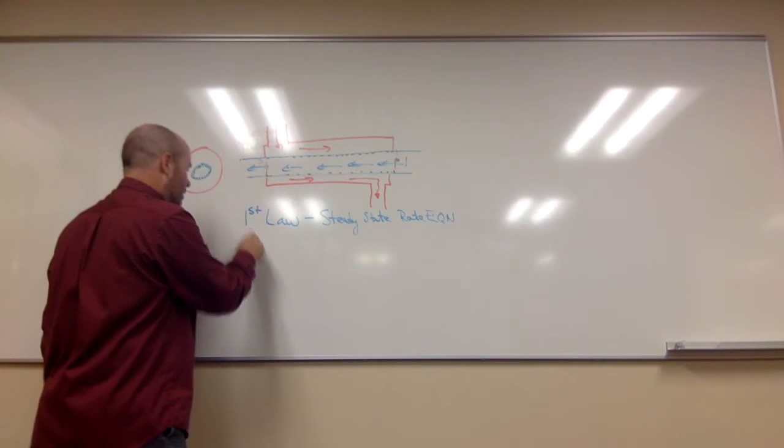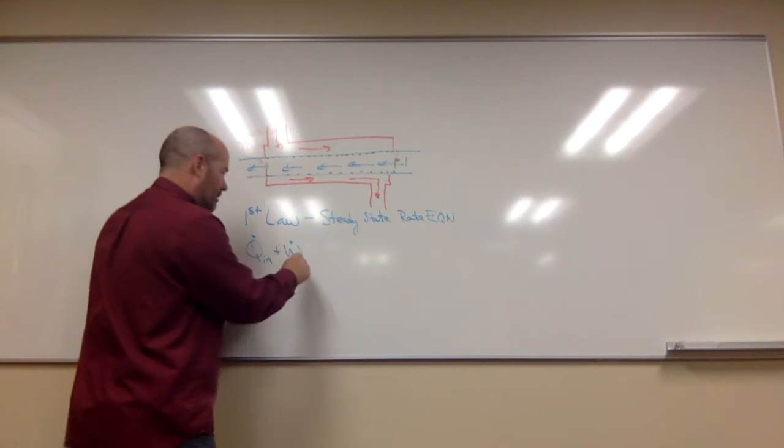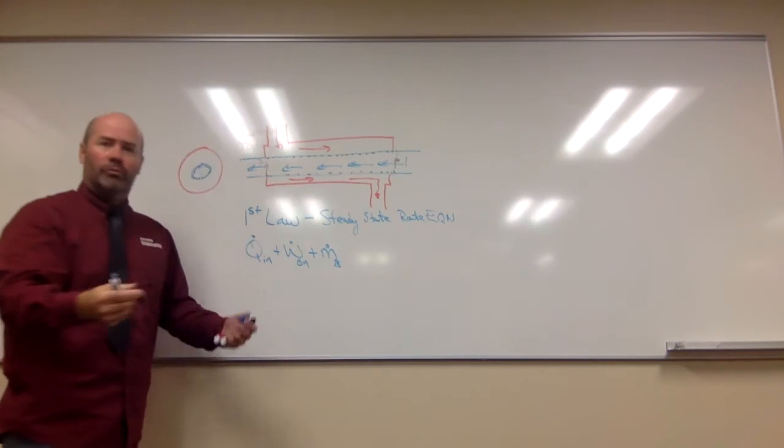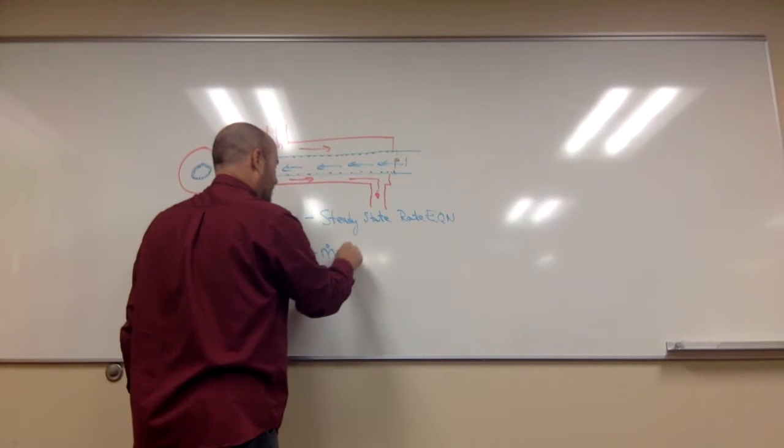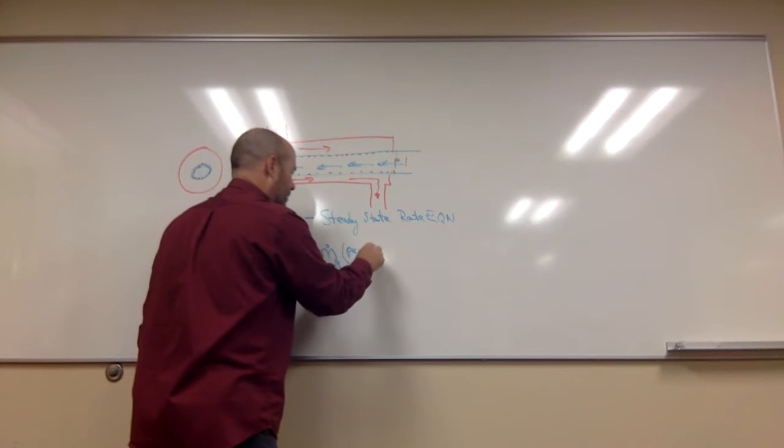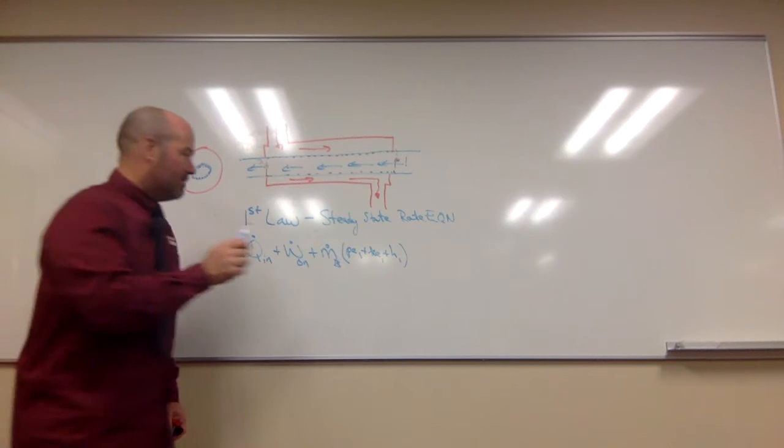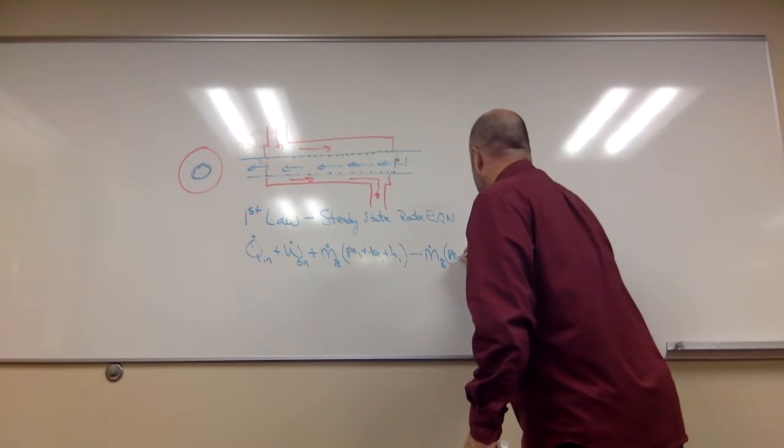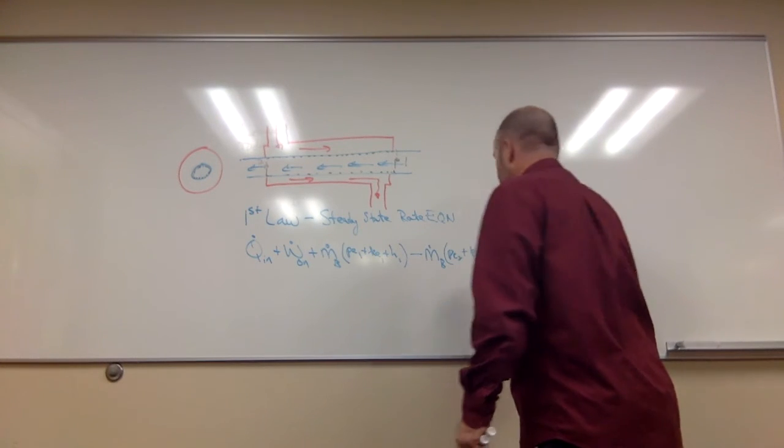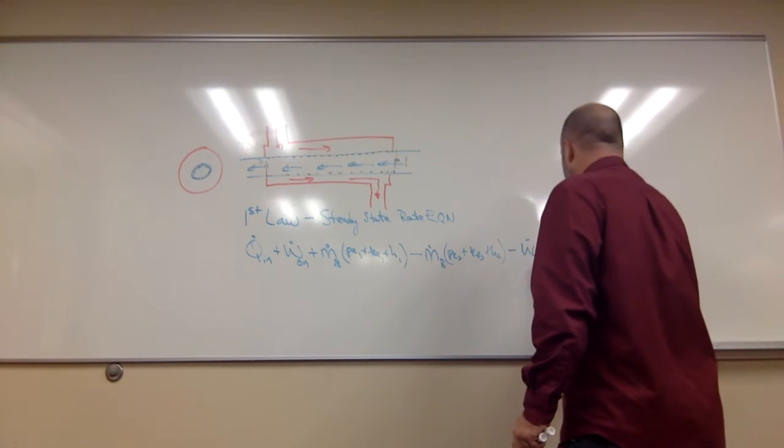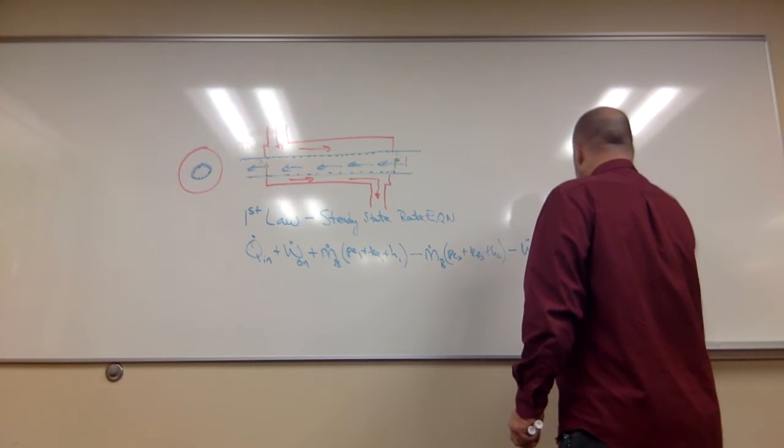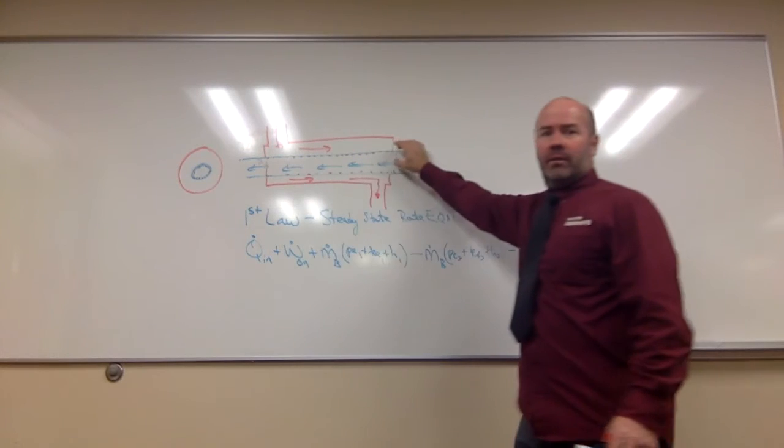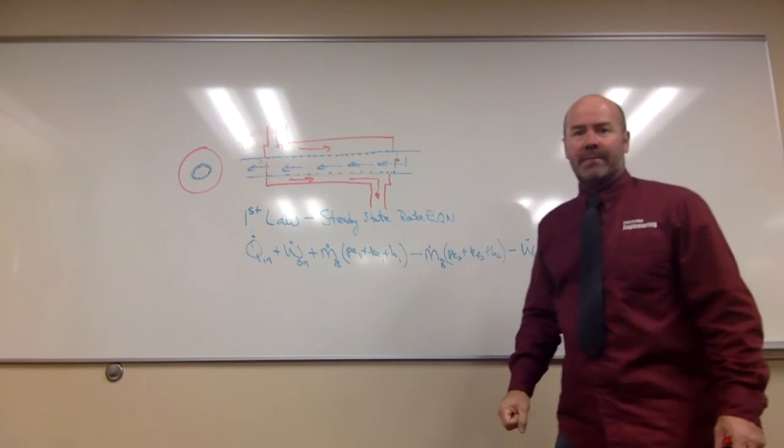Here's what that would look like. The rate of heat transfer into the fluid plus the mechanical power rate of work on the fluid plus the mass flow rate of fluid flowing in. I'm going to call that B for blue fluid times the potential energy at point one. And this is specific plus kinetic energy at point one plus enthalpy at point one minus the mass flow rate of the blue fluid times the potential energy at point two, kinetic energy at point two, and enthalpy at point two minus the mechanical power by the fluid minus the rate of heat transfer out of the fluid equals zero. Steady state. So we aren't changing the energy stored in the fluid over time. Whatever's in there, it stays that same number over time. That's what steady state means.